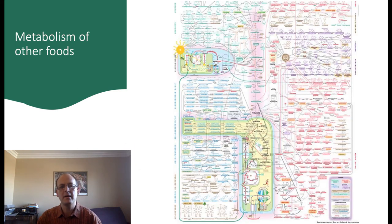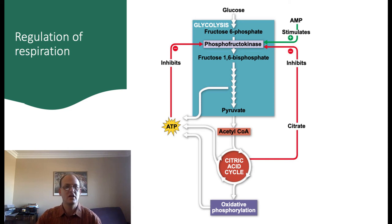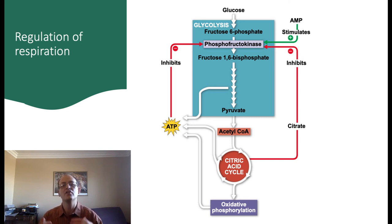Not surprisingly, biochemists have mapped out these chemical reactions far beyond what we've covered. The last thing we need to look at is how cellular respiration is regulated. If you remember back to our discussion on enzymes, we looked at feedback inhibition, in which a product of a reaction or several reactions in a pathway serves as an inhibitor of one of those enzymes. The same sort of thing happens in regulating the glycolytic pathway.